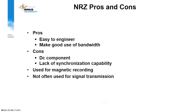Non-Return to Zero pros and cons: Pros — easy to engineer and makes good use of bandwidth. Cons — DC component, lack of synchronization capability. NRZ is used for magnetic recording but is not often used for signal transmission.